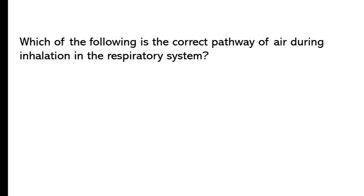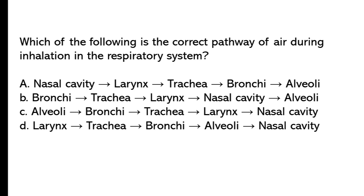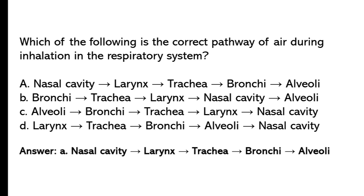Which of the following is the correct pathway of air during inhalation in the respiratory system? So the correct answer is option A: nasal cavity, larynx, trachea, bronchi, alveoli. This is the correct pathway of air during inhalation in the respiratory system.